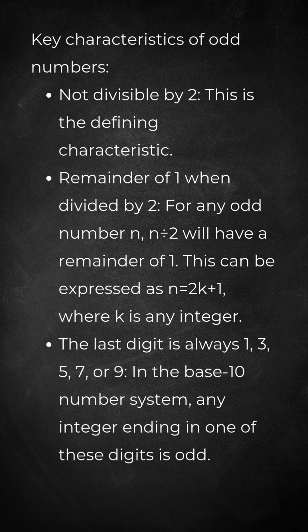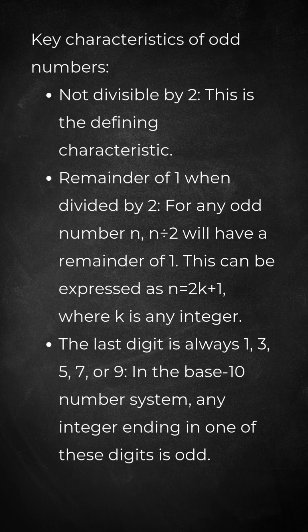Remainder of 1 when divided by 2. For any odd number n, n divided by 2 will have a remainder of 1. This can be expressed as n equals 2k plus 1, where k is any integer.